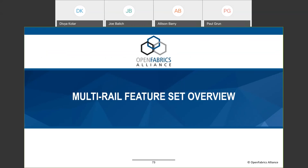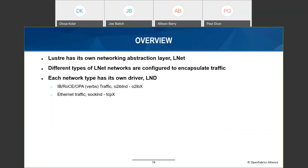Lustre is a parallel file system used in many HPC environments and it's gaining traction in other areas such as AI and the cloud. Lustre performs its file system operations by exchanging RPC messages between the client nodes, management server nodes, metadata server nodes, object server nodes, and the different target nodes. These RPC messages perform operations like file locking and initiating RDMA operations to get data from the clients to the servers or vice versa. Lustre's RPC protocol is implemented by the Portal RPC layer, which is composed of LNet messages — this is where LNet comes in.